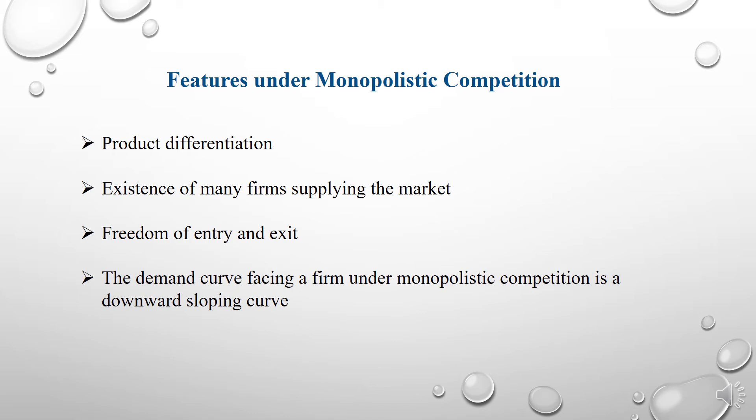Now we'll move to learn about the features under monopolistic competition. Monopolistic competition refers to the market situation in which many producers produce goods which are close substitutes of one another. There are some important distinguished features of monopolistic competition: product differentiation, existence of many firms supplying the market, freedom of entry and exit. The demand curve facing a firm under monopolistic competition is a downward sloping curve.